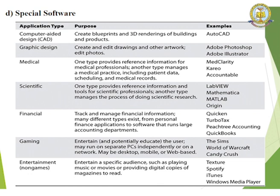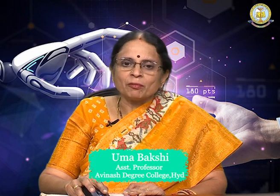Gaming software entertains and potentially educates the user and may run on separate PCs independently or on a network, and may be desktop, mobile, or web-based — examples include Candy Crush or World of Warcraft. Entertainment software entertains a specific audience, such as playing music or movies or providing digital copies of magazines to read — examples include Spotify, iTunes, and Windows Media Player.